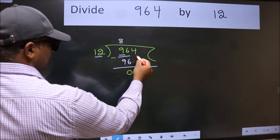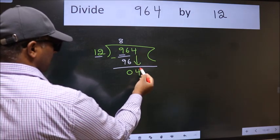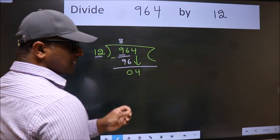After this, bring down the beside number. So 4 down. After this step, the mistake happens.